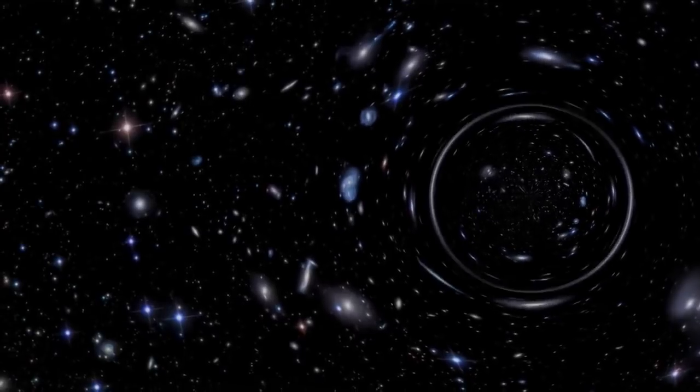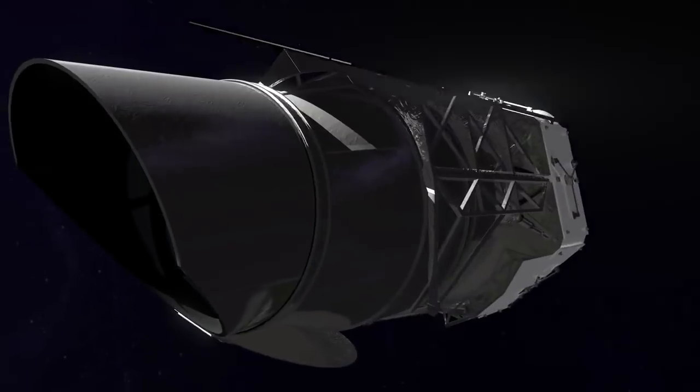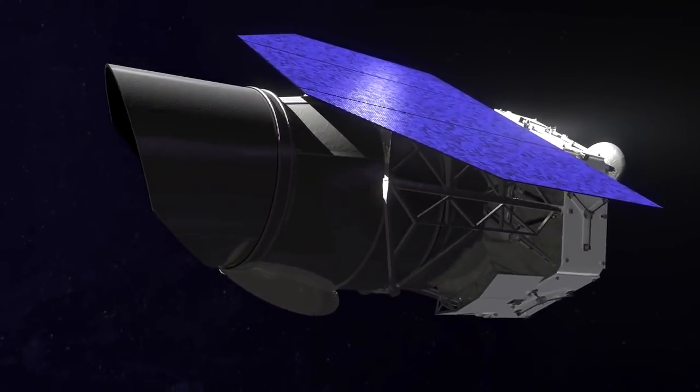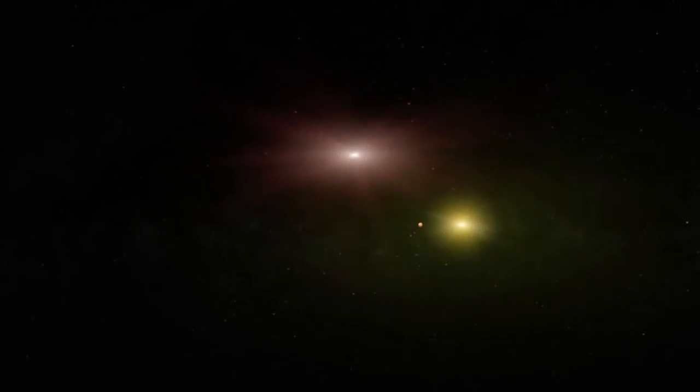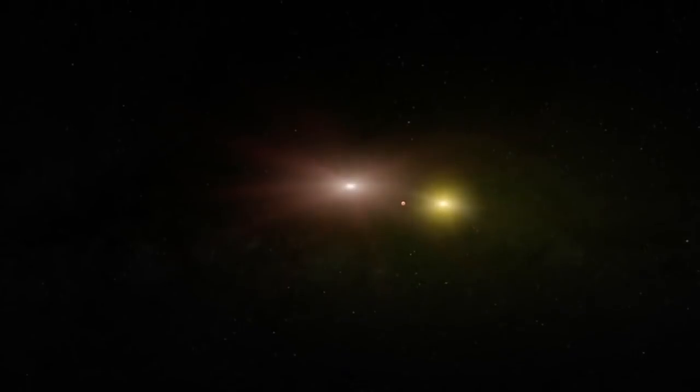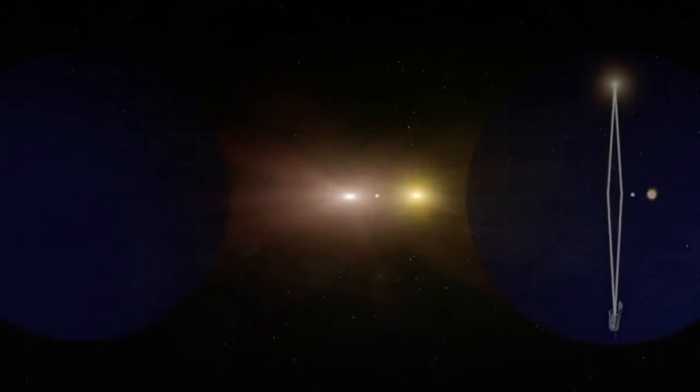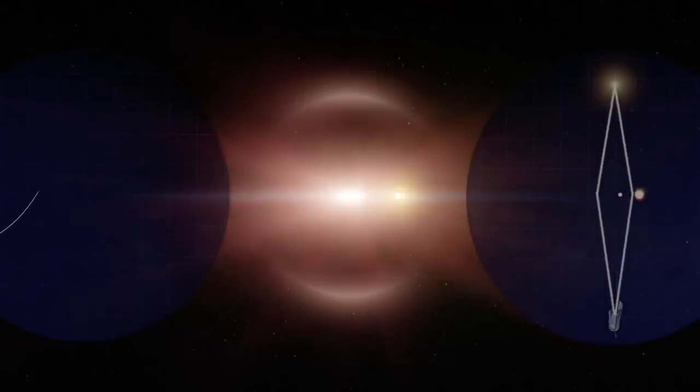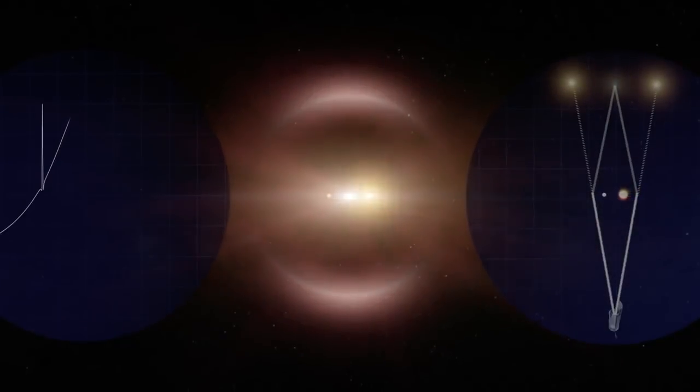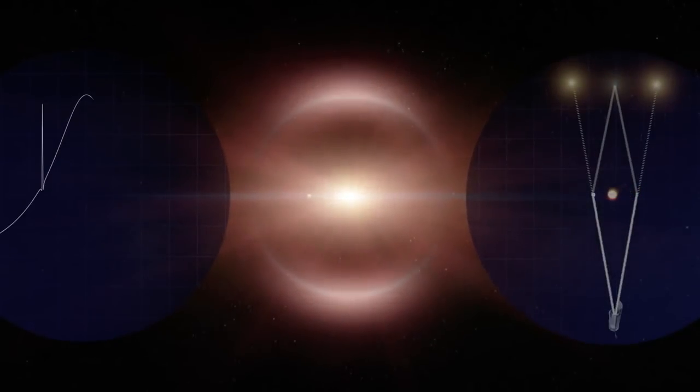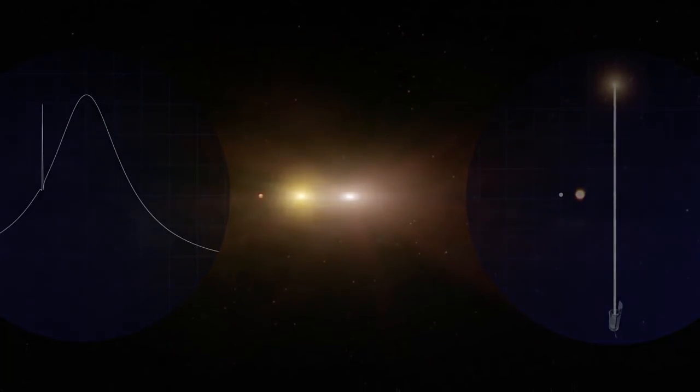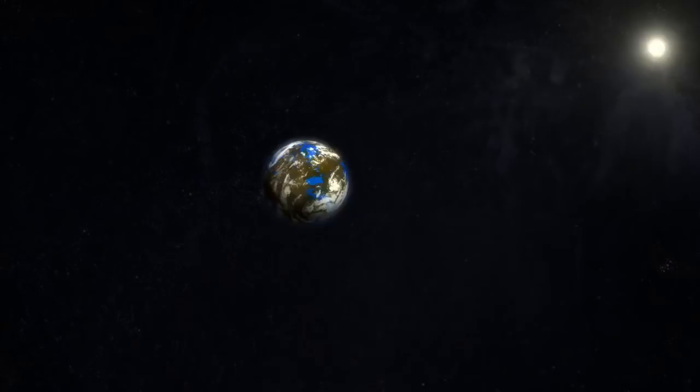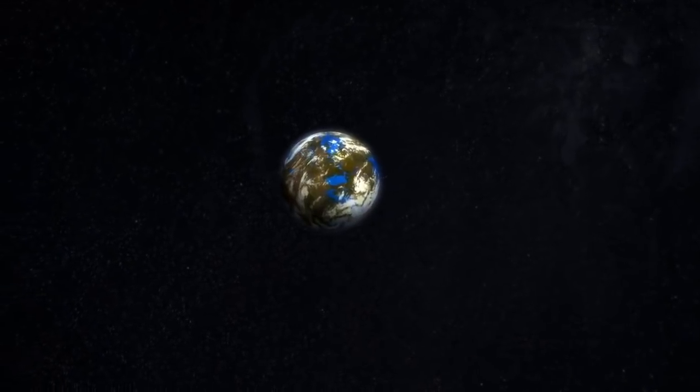WFIRST's powerful 2.4 meter telescope will also help us in the search for extrasolar planets, or exoplanets. Using the same gravitational lensing principles, WFIRST will watch for gravitational microlensing events, a unique light signature caused when a planet and its host star pass in front of a background star. This technique extends planet detection capabilities to smaller and more distant worlds than other methods, so it can catch ones that have eluded us before.